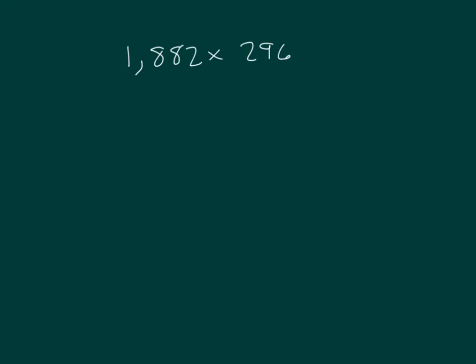Here's another problem. Let's go ahead and find an estimated product. 1,882 rounds to 2,000. 296 rounds to 300. So I can figure out my estimated product.